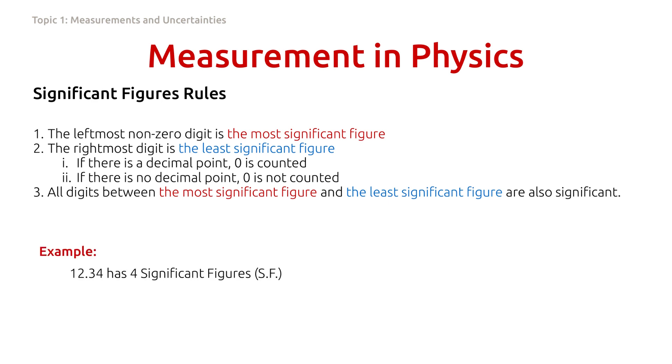Example, 12.34 has four significant figures. Here, one is the most significant figure, while four is the least significant figure. And all digits in between are also significant. That's why we have four significant figures.